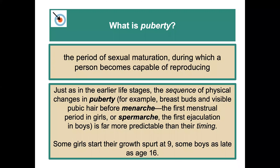What is puberty? Puberty is the period of sexual maturation during which a person becomes fully capable of reproducing. Just as in earlier life stages, the sequence of physical changes in puberty is far more predictable than their timing. Some girls start growth spurts and the onset of puberty quite early, even as early as age nine. Some boys don't start puberty until as late as age 16. That's all a normal range — everybody's different, and there's quite a bit of biological influence.